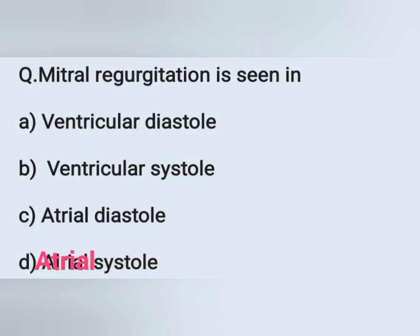Next question: mitral regurgitation is seen in: A) ventricular diastole, B) ventricular systole, C) atrial diastole, D) atrial systole. Mitral regurgitation is seen during ventricular systole. Option B is the correct answer.